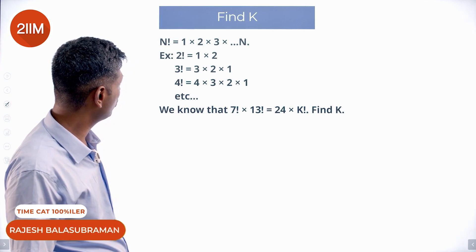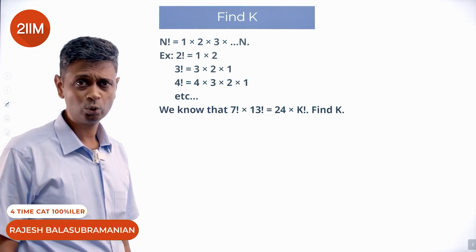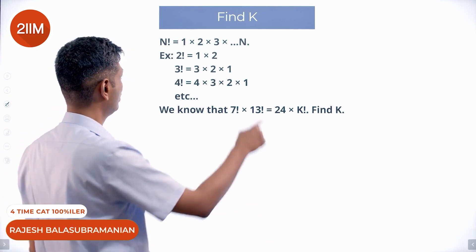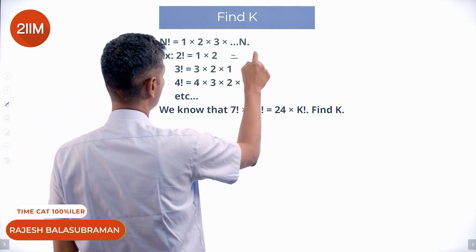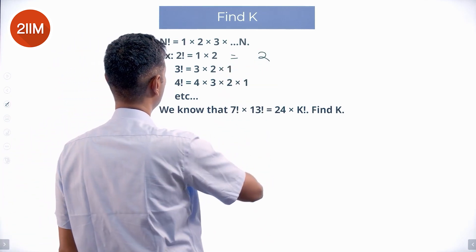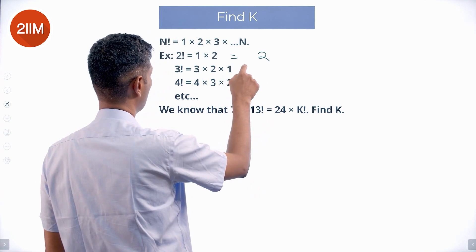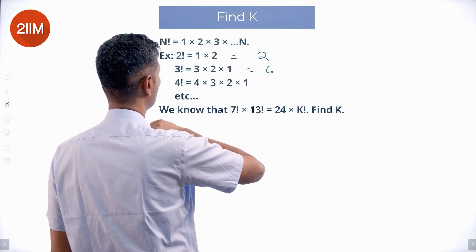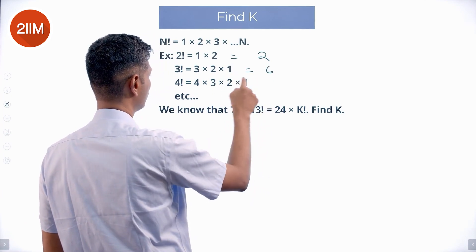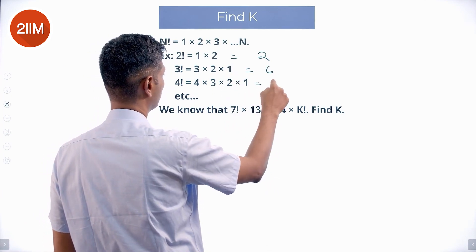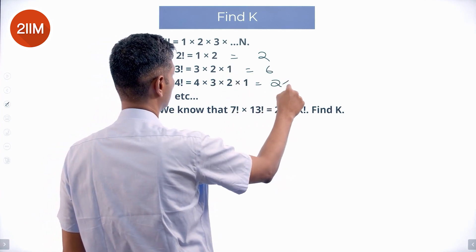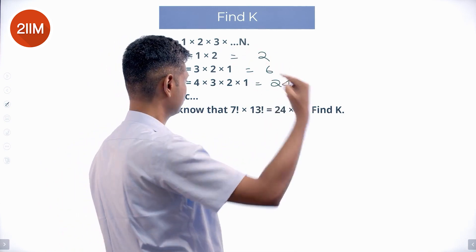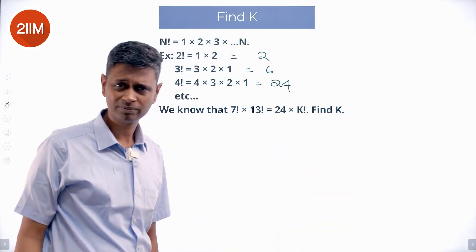Factorial is defined as 1 × 2 × 3 × 4 up to n. So 2 factorial is 1 × 2. 3 factorial is 3 × 2 × 1, which is 6. 4 factorial is 4 × 3 × 2 × 1, which is 24, and so on.